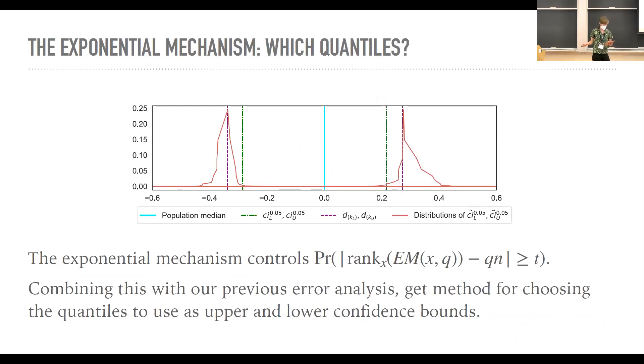So because the scoring function is in terms of the rank, this mechanism guarantees that your rank of your output is probably approximately close to what your target rank is. So we can use this in combination with that rewriting of the empirical rank of the population median. Do some math that I'm not going to show you and get some relatively tight confidence bounds on the median that are privacy preserving. So here you can see in red, that's just the noisy distribution of the output. And you'll see that with high probability, it's always kind of, it's always outside of the, at least in this example, it's always outside of that two confidence interval, sorry, or the non-private confidence interval. And it certainly contains the population median. Though this is only one run, of course.